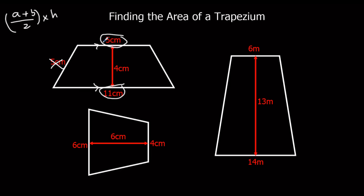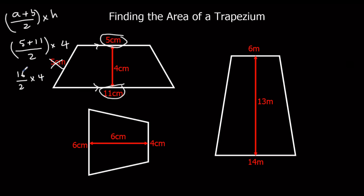So A plus B — that's five and eleven. It doesn't matter which way around you put them. Over two, times the height, which is four. Five plus eleven is sixteen, so sixteen over two times four. Half of sixteen is eight, so eight times four is thirty-two. We measure area in squares, so thirty-two centimetres squared.